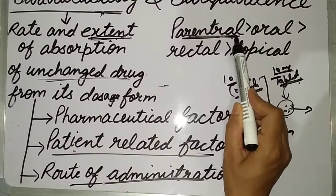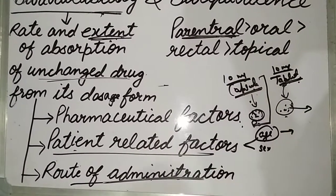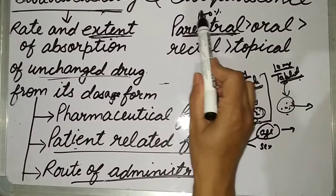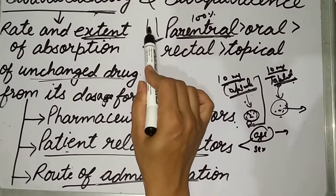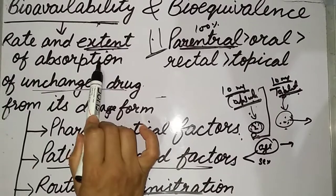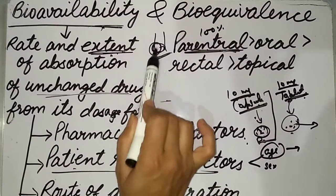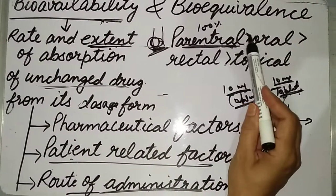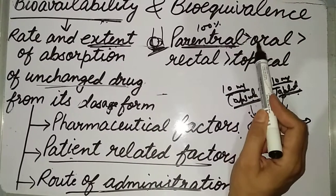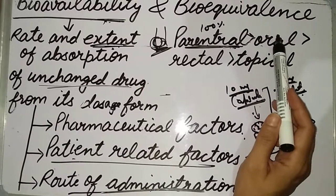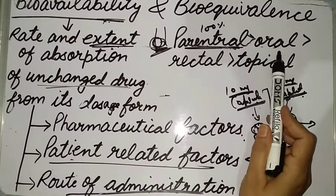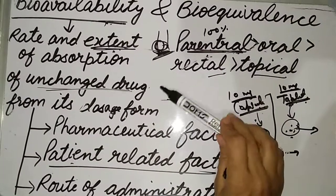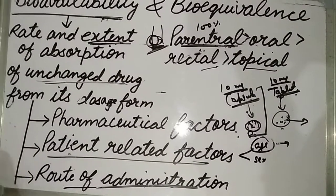The parenteral route, in which the whole drug is given directly into the systemic circulation, gives a bioavailability of 100% because the entire drug has been provided into the blood. So the rate and extent of absorption of the unchanged drug into the systemic circulation is bioavailability. If the route is parenteral, the bioavailability will be 100%. Highest bioavailability is observed with the parenteral route, followed by the oral route where absorption must take place first, then the rectal route, and then the topical route. Remember that we obtain 100% bioavailability in the case of the parenteral route.